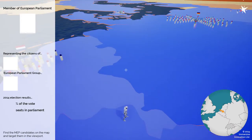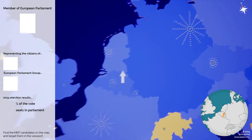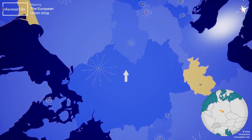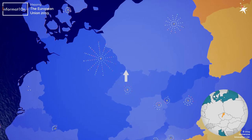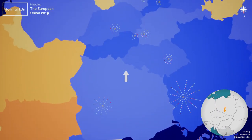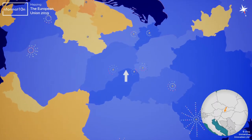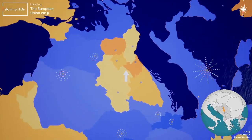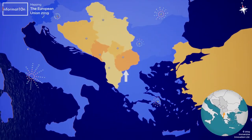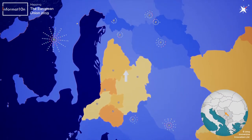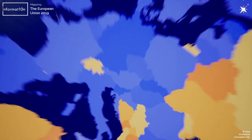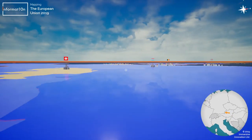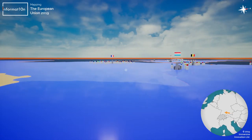Zooming out to third person view and then further to a bird's eye view gives a nice visualization of just how many MEPs are representing each country. You can see Germany with a large number of MEPs, Poland also quite a large number, and then some smaller central European states with fewer MEPs. The Balkan states, which are not members of the European Union, do not have MEPs on the map. That is MEP mode, where you can explore the different people currently representing each nation within the EU Parliament.